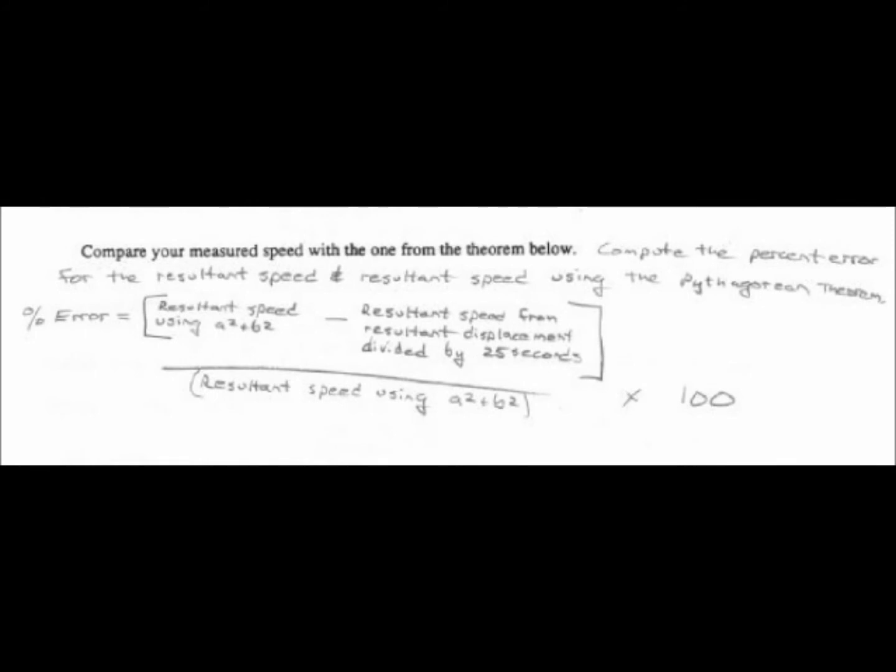You will have two resultant speeds. One will be measured on the field. The other will be obtained using a squared plus b squared equals c squared using the horizontal speed as a, the vertical speed as b. Use both to calculate percent error.